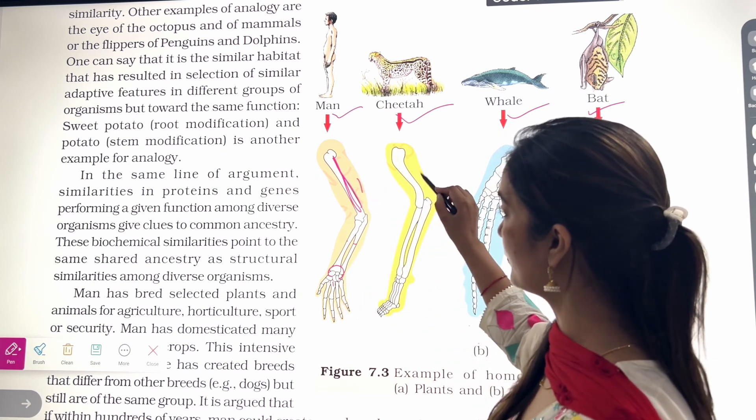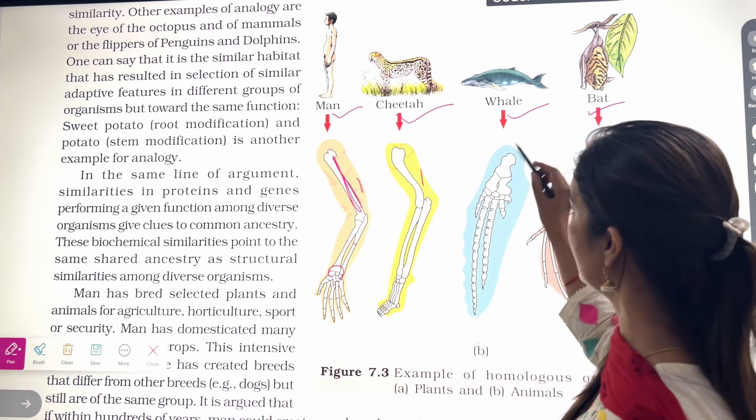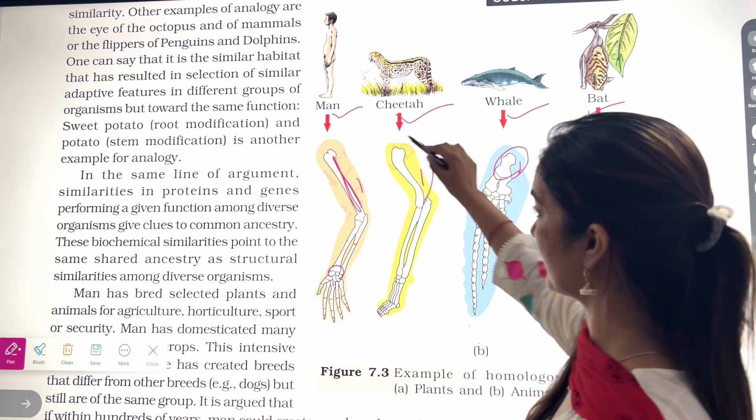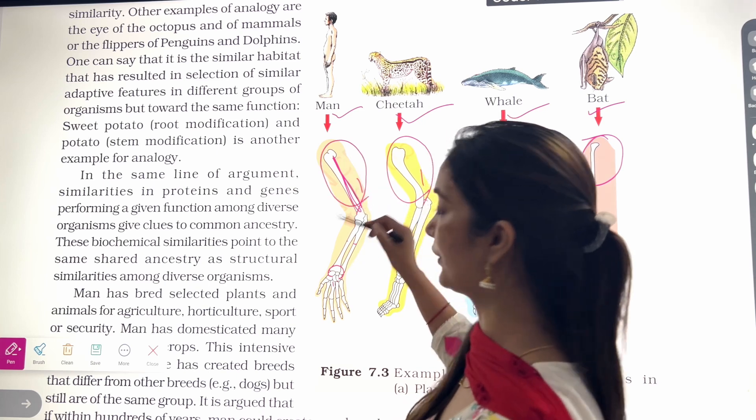So you can see here is one humerus. So here is also one humerus, whether it is cheetah or whale or bat. Humerus is one. The upper bone is one.